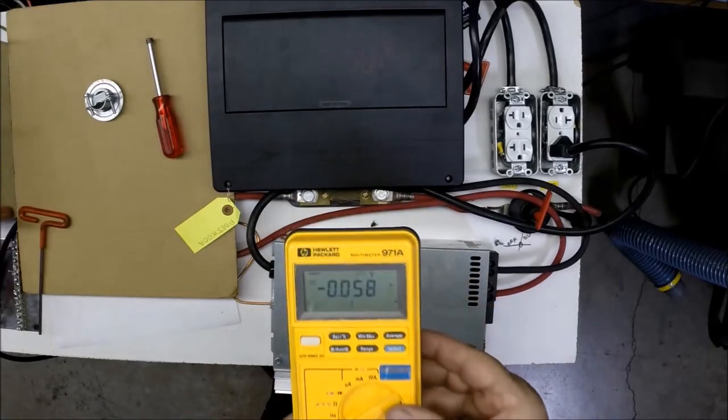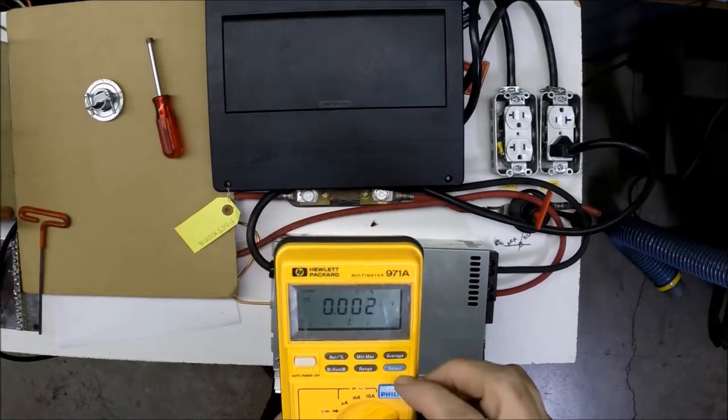To check the deck mount style converter, you need a multimeter with AC and DC ranges.